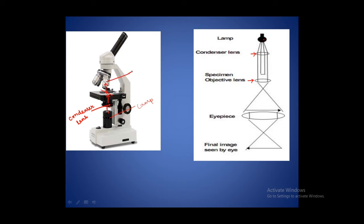This is the objective lens, and from here the light goes to the eyepiece. From the eyepiece, the final image can be seen by our eyes, or it can be captured through a camera if one is attached. An external camera can be connected so that whatever specimen is being observed will be captured as an image.